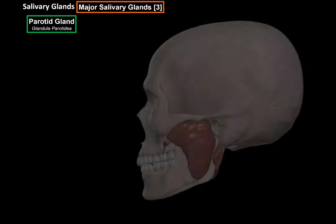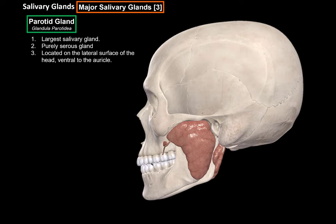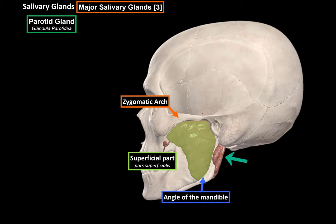Let's start with the parotid gland. There are three things to remember about it. One: it's the largest salivary gland you have. Two: it contains purely serous glands, meaning it doesn't have any mucus or seromucus glands — its main function is to produce watery secretion containing enzymes. Three: it's located on the lateral surface of the head, ventral to the auricle. The parotid gland consists of a superficial part, which lies between the zygomatic arch and the angle of the mandible, and a deep part, which lies in the retromandibular fossa.